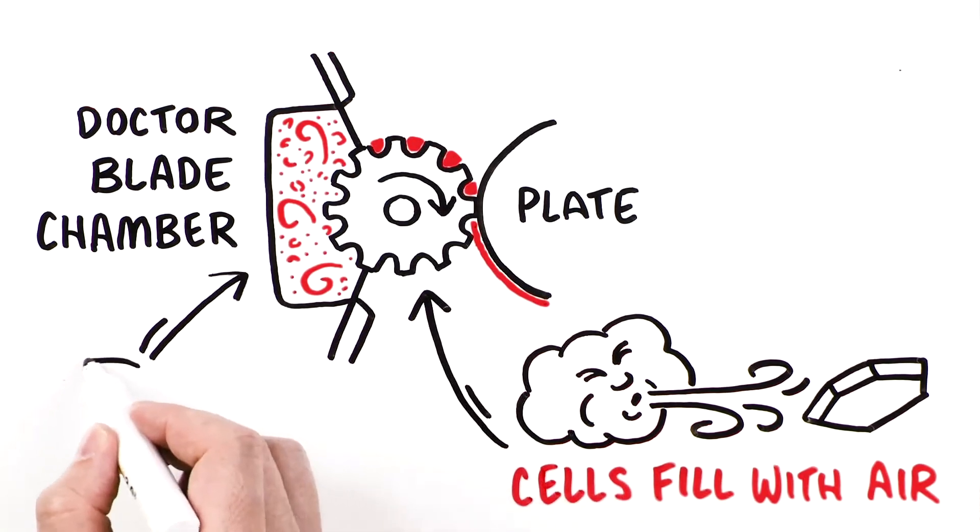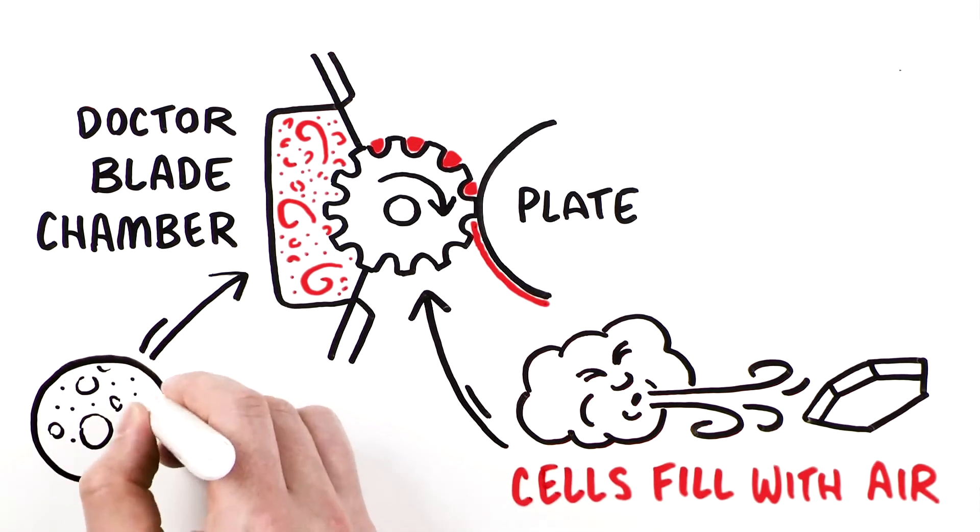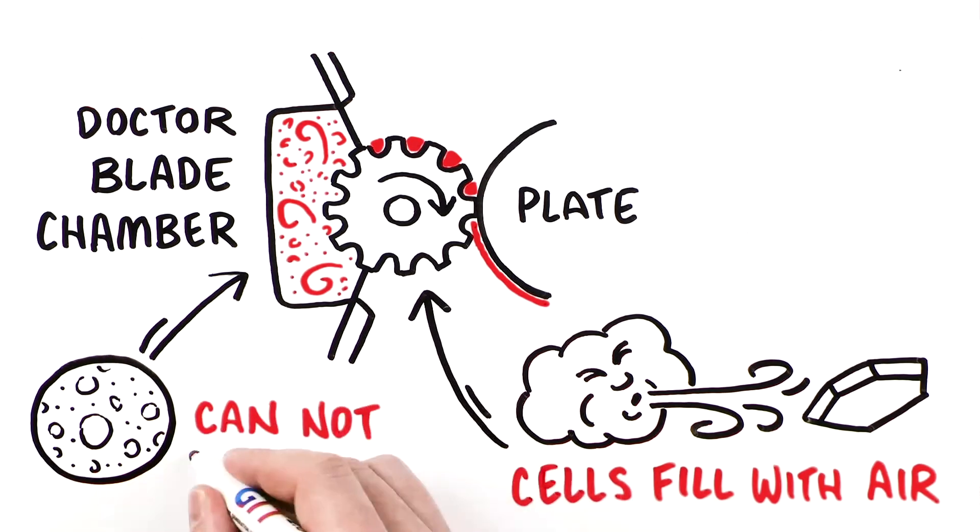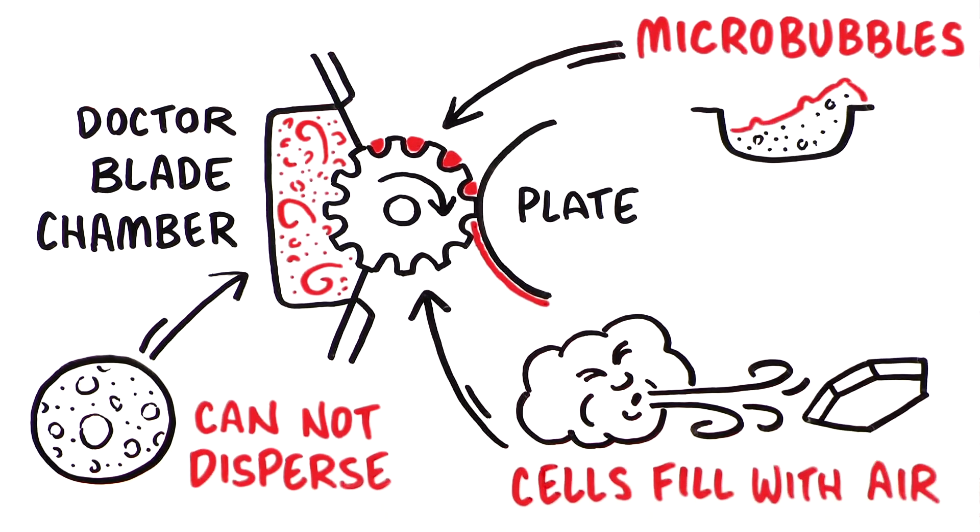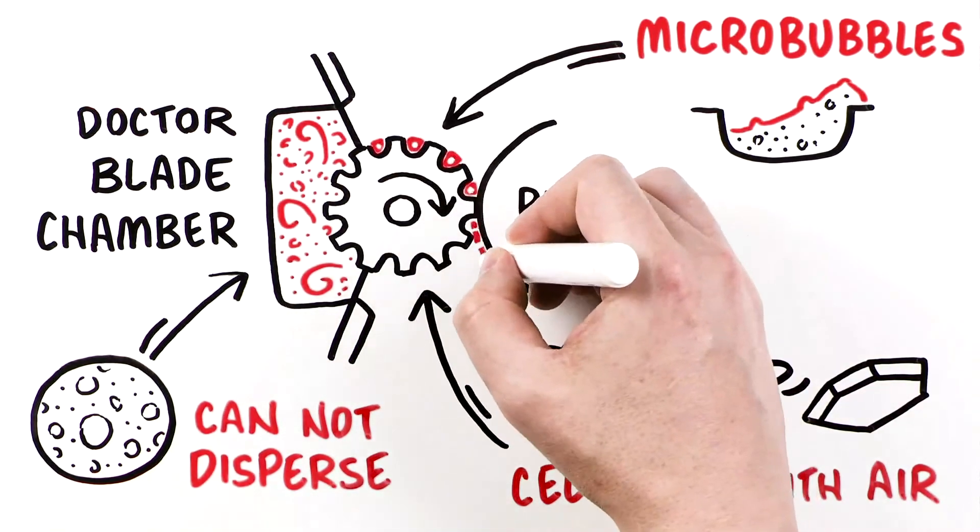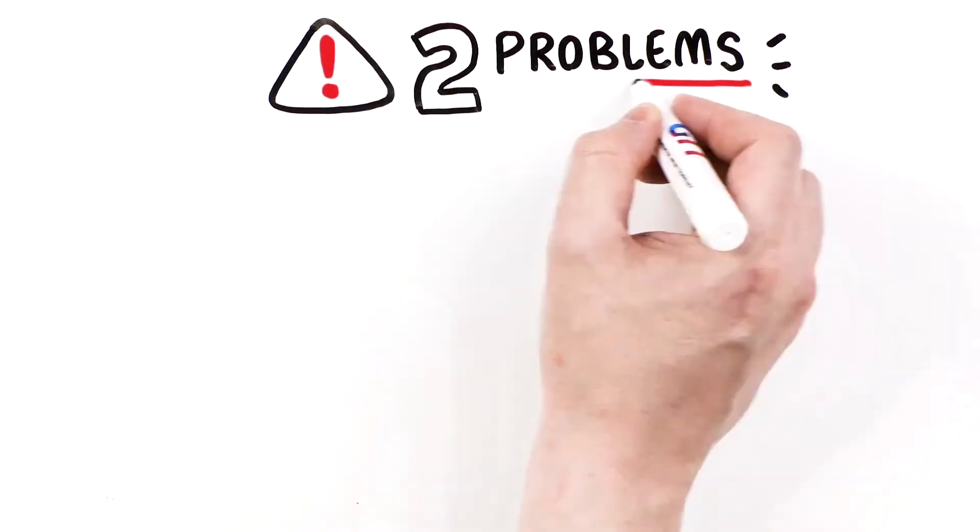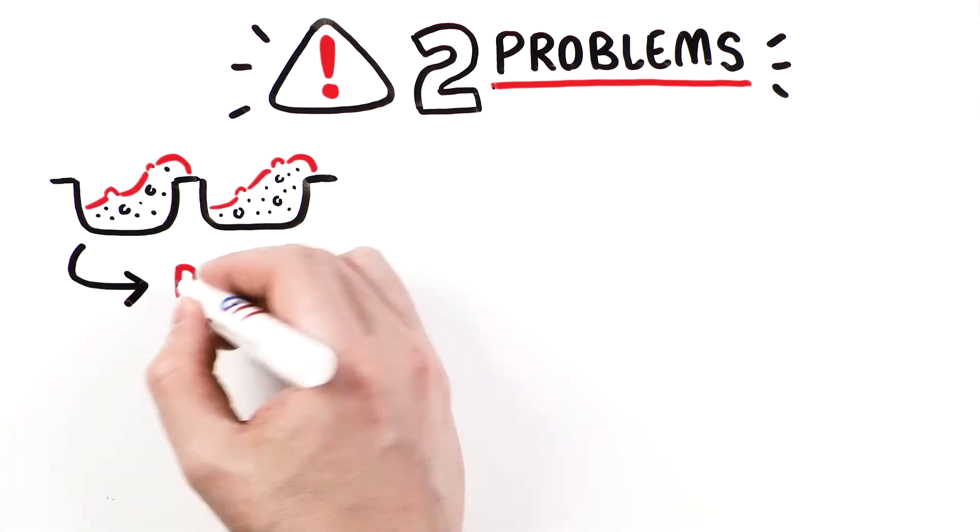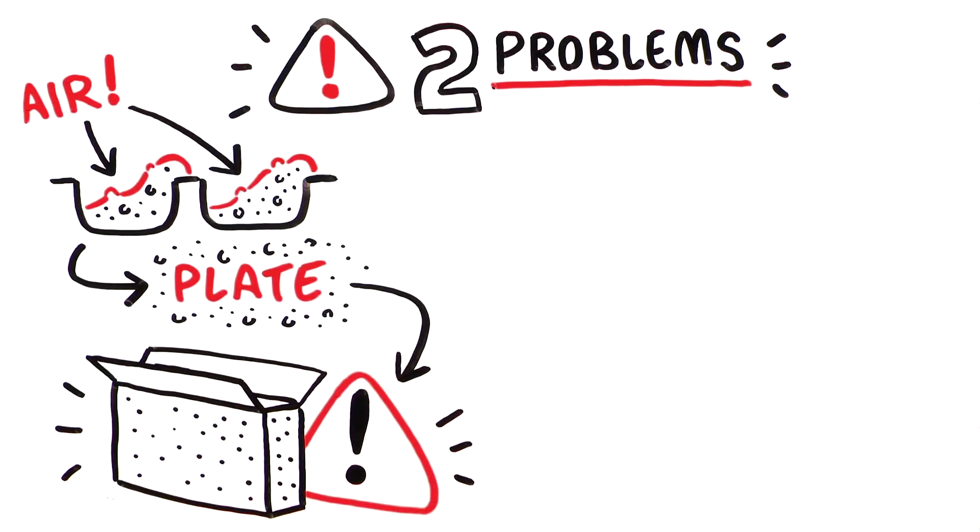The rapidly rotating anilox creates a washing machine effect inside the chamber, and air within the chamber cannot be dispersed. This creates micro-bubbles within the ink as the anilox cells are refilled with both air and ink. This creates two problems. First, the ink delivered to the plate includes air that will create pinholes in the print.